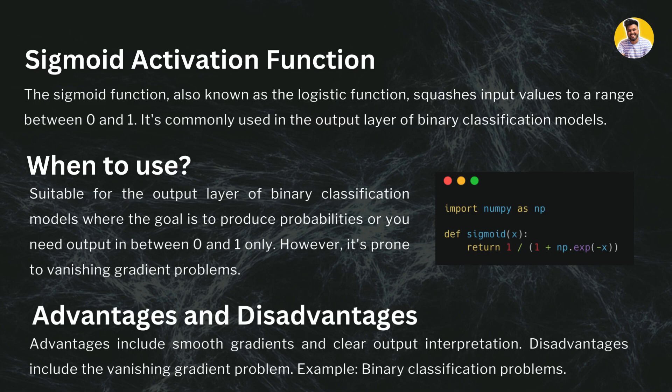The formula of the sigmoid function is: 1 divided by (1 + e^(−x)), where x is your input. Advantages include smooth gradients and clear output interpretation since it outputs values between 0 and 1. The main disadvantage is the vanishing gradient problem.